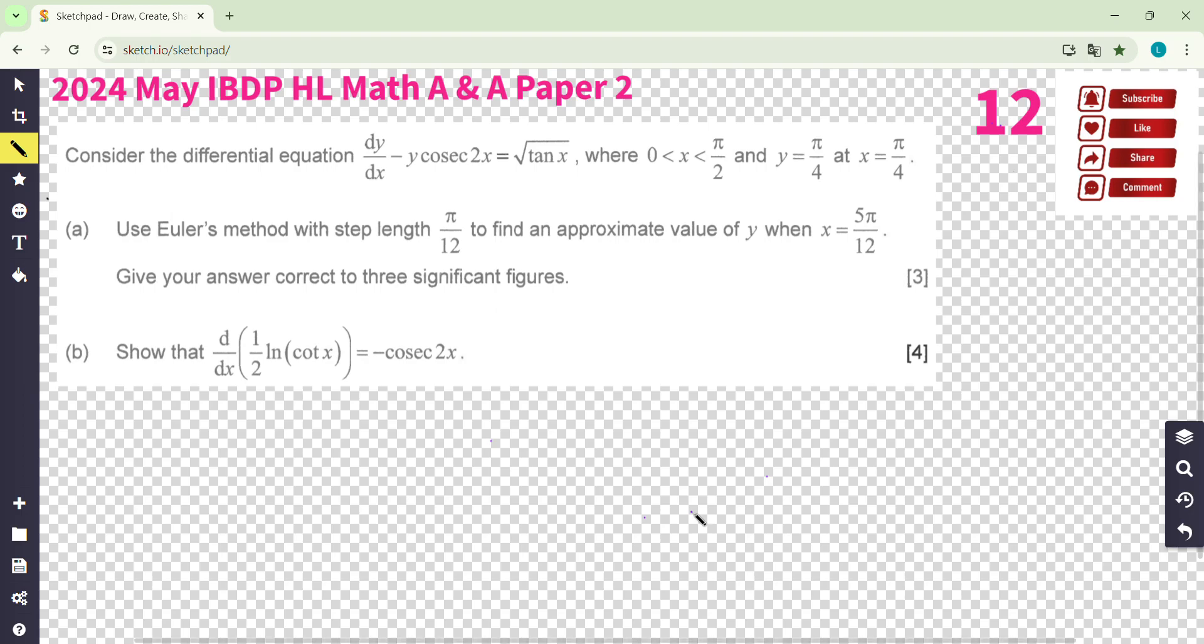Welcome back. We are on the last question of paper 2, question 12. First is Euler's method. Our step is π/12 and then go to 5π/12, starting point.